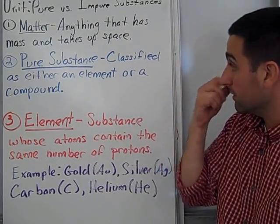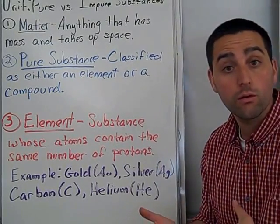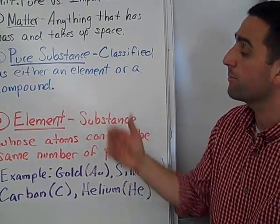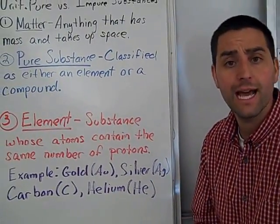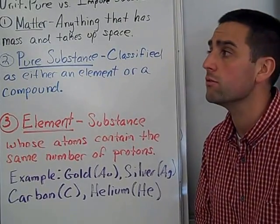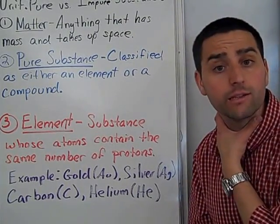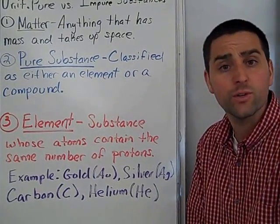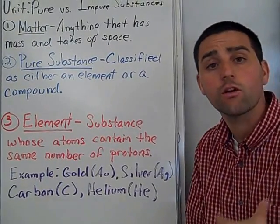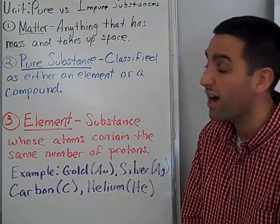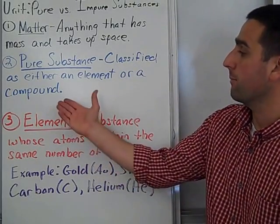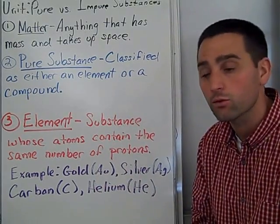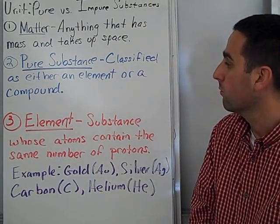So matter can be classified as impure or a pure substance. And the first type of substances we're going to talk about are what we call pure. And they can be classified as either an element, which you'll find on the periodic table. There's a hundred plus elements on the table.